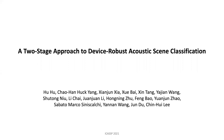Hello everyone. Today I'm going to talk about our paper to ICASSP 2021. The name is 'A Two-Stage Approach to Device-Robust Acoustic Scene Classification.' I'm Hu Hu from Georgia Tech.